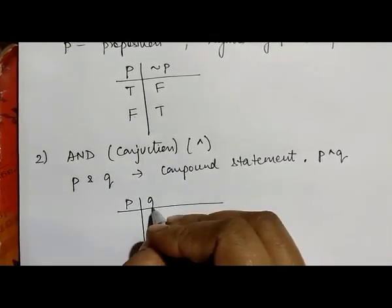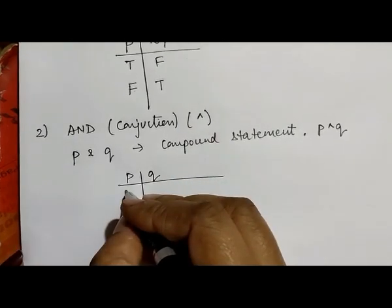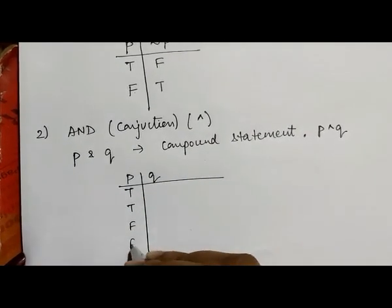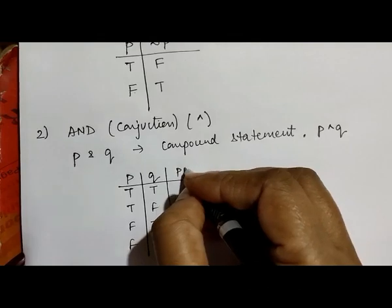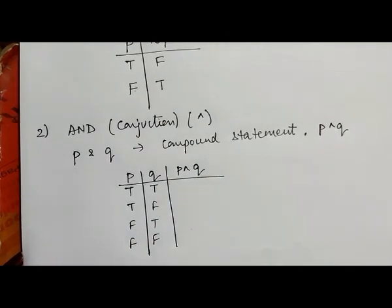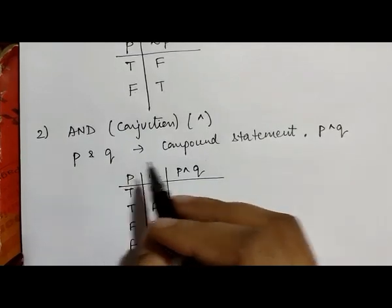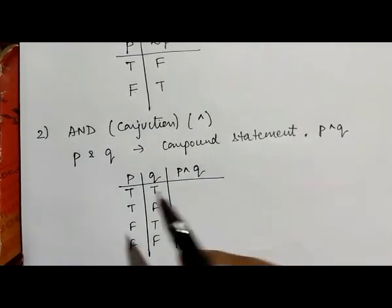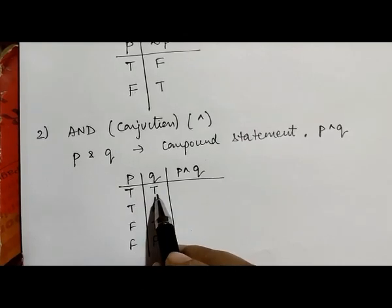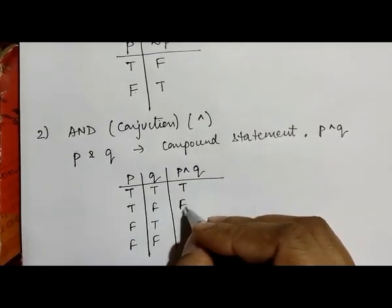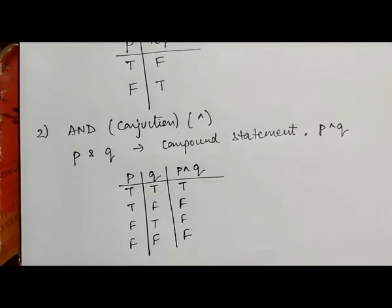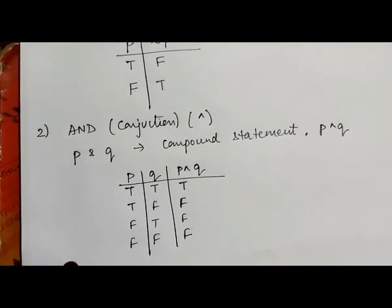The truth table for AND (conjunction) has two compound statements p and q. The inputs are: true-true, true-false, false-true, false-false. The conjunction is similar to the AND gate: if both inputs are true, the output is true; for all other input combinations, the output is false.